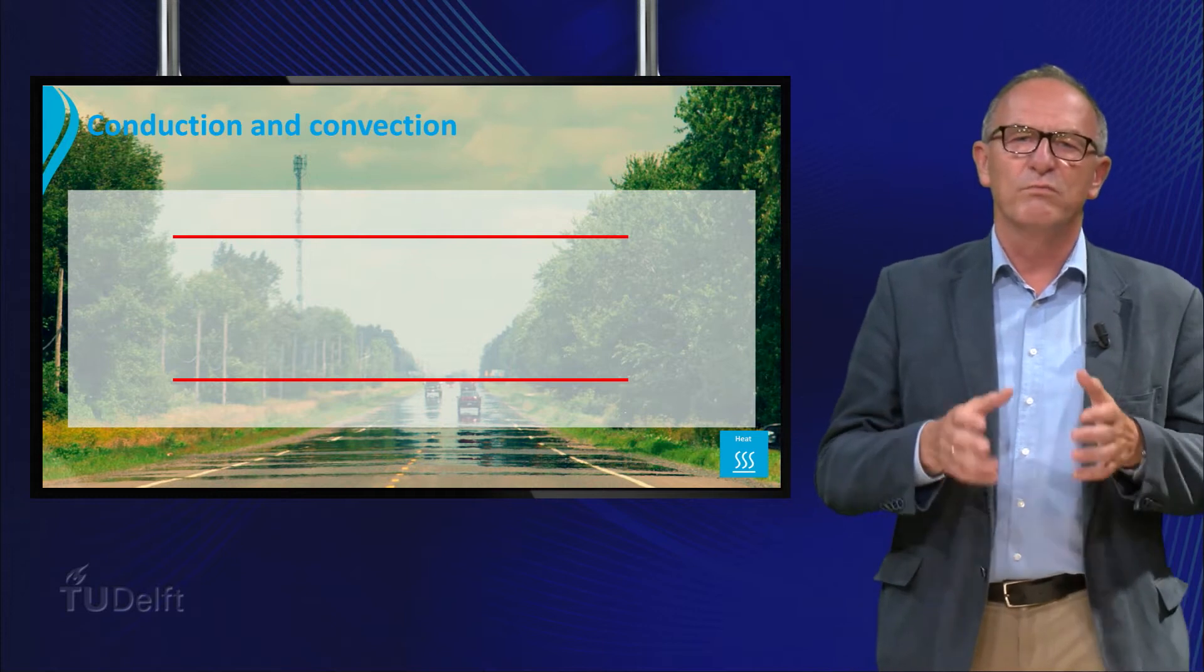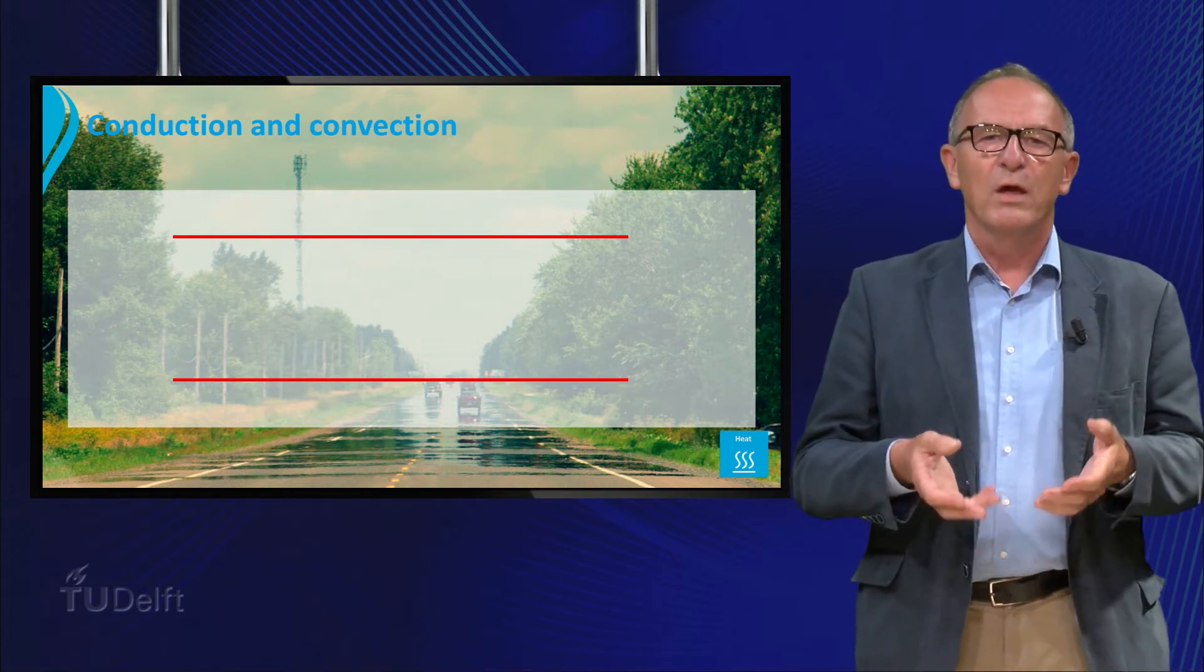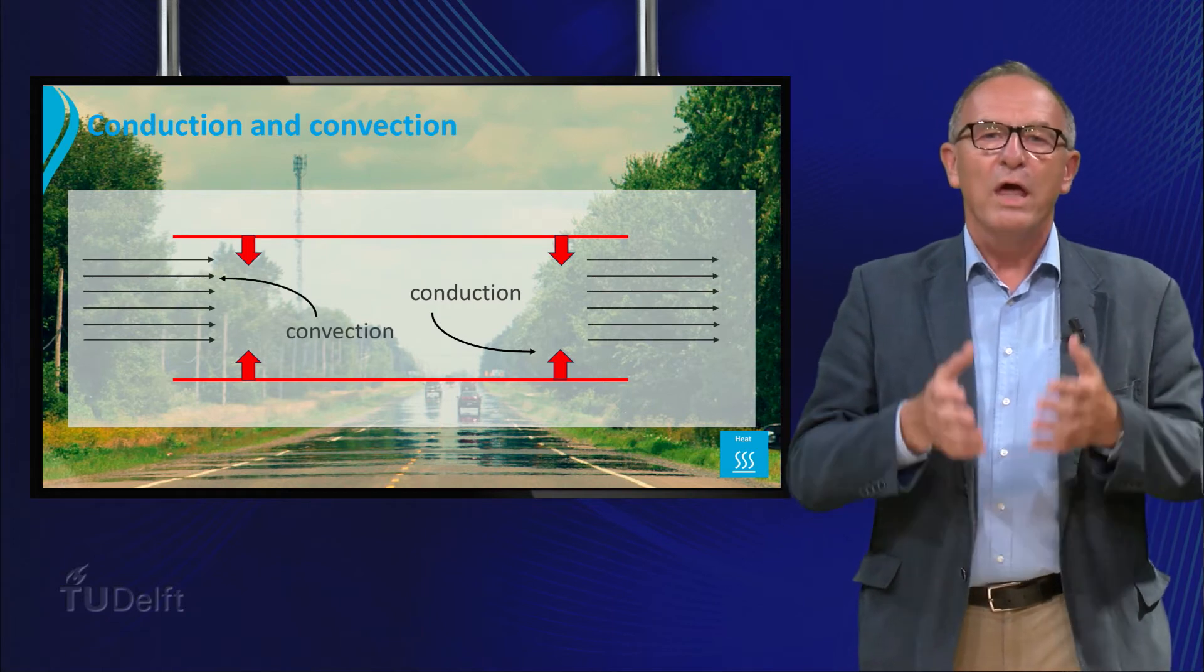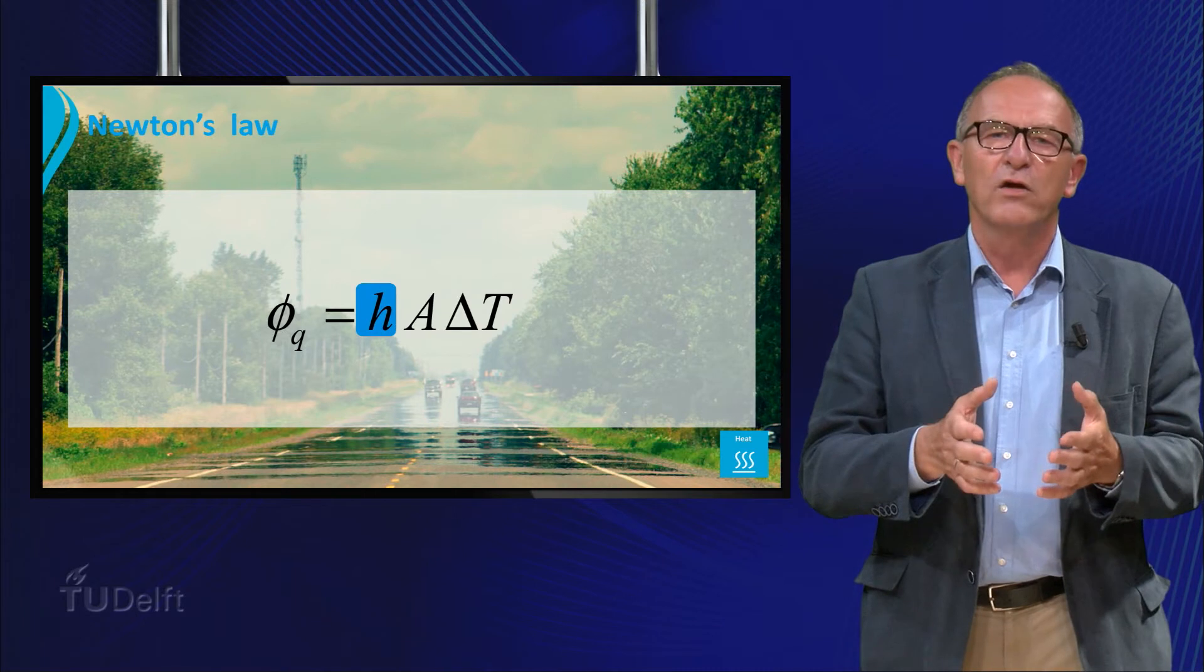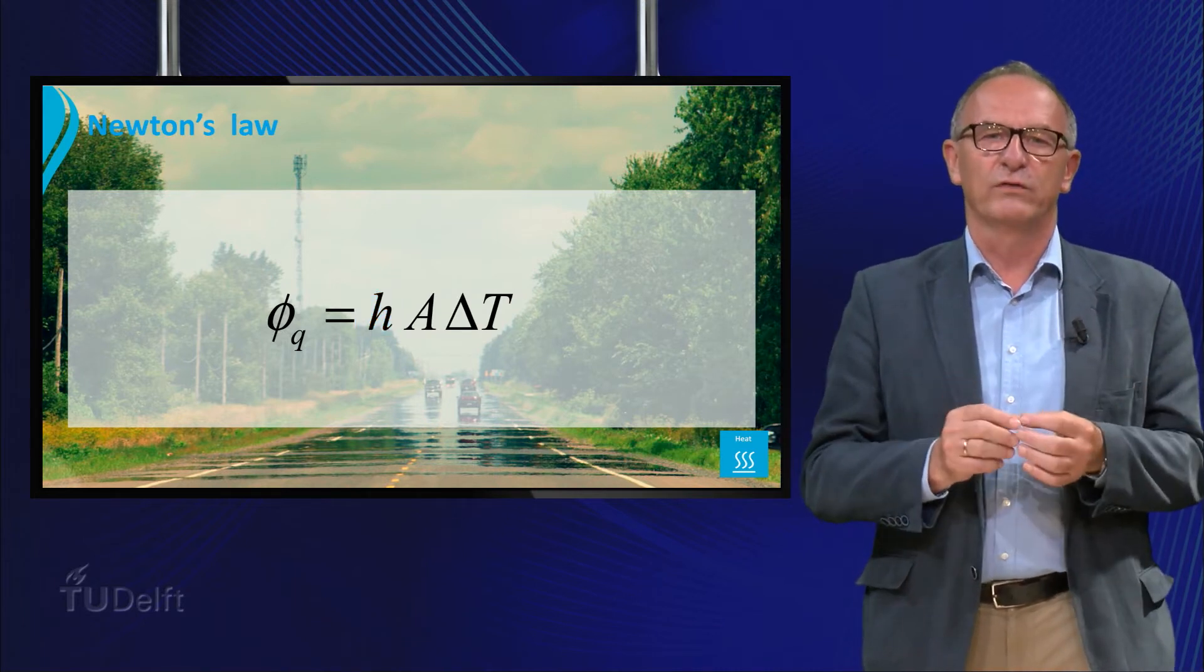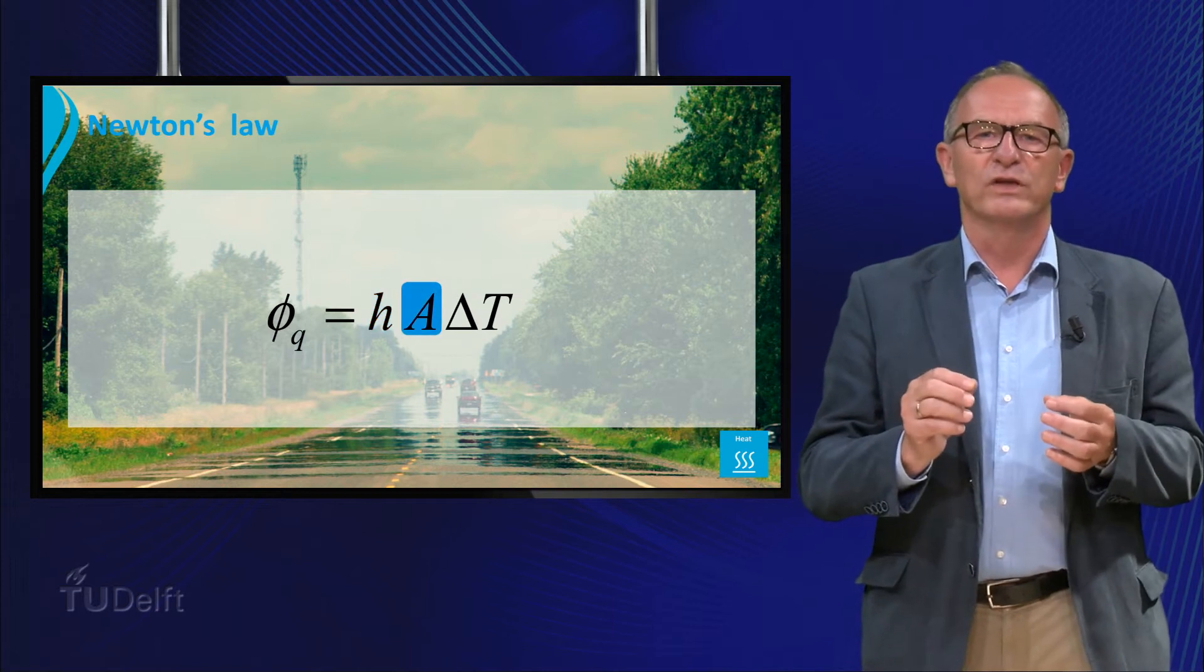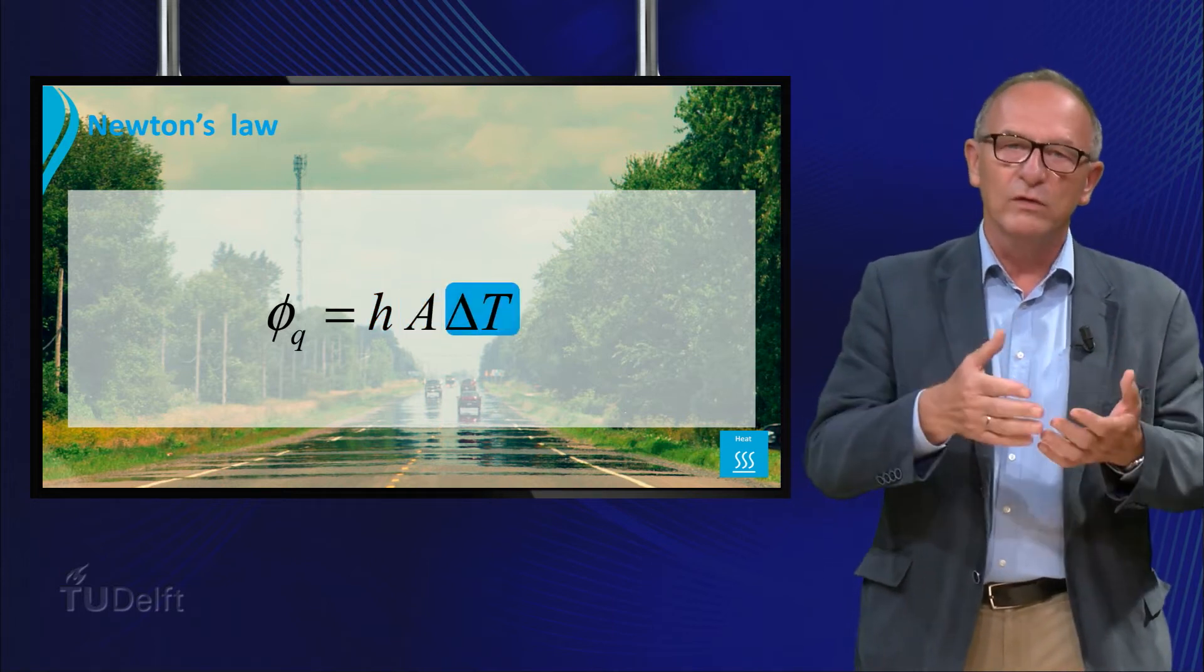Until now our focus was mainly on heat transfer by conduction described by Fourier's law. But in the case of a pipe flow we have a combination of conduction and convection in the fluid. The heat transfer coefficient h in Newton's law of cooling plays an important role in this complex process of heat transfer. In this equation h is the heat transfer coefficient, A the surface area over which heat is exchanged, and ΔT is the temperature difference between the fluid and the wall.